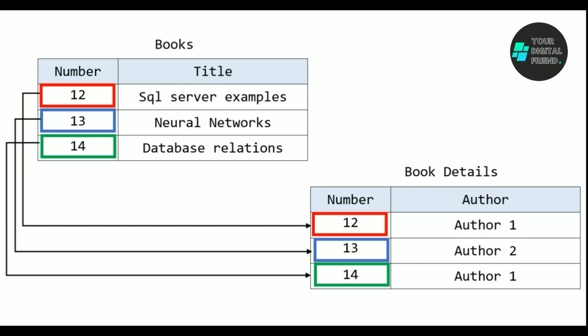For example, the book with number 12 is written by author 1, the book with number 13 is written by author 2, and the book with number 14 is also written by author 1.